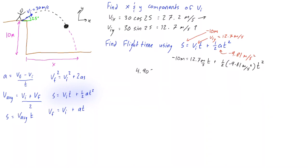What we should do here is just rearrange this so we have all of the terms on one side. So we get 4.905 t squared minus 12.7t minus 10 is equal to zero.